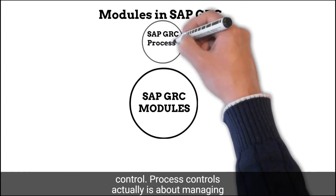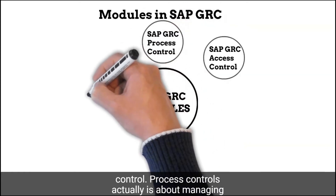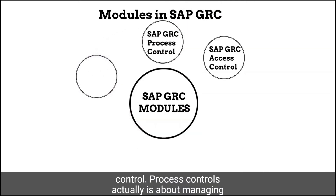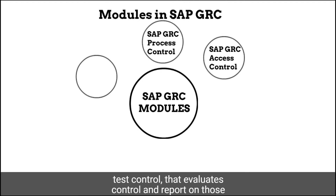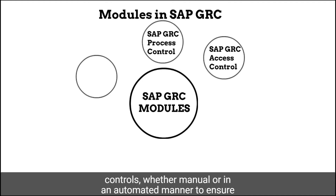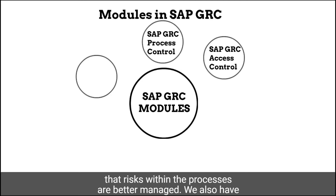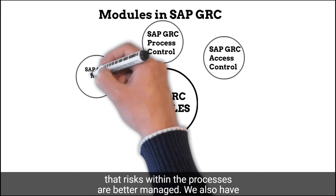We have process controls. Process controls is about managing transactions and activities within the SAP system, and that is where we have the various tools that manage, test, and evaluate controls — reporting on those controls whether manually or in an automated manner — to ensure that risks within the processes are better managed.